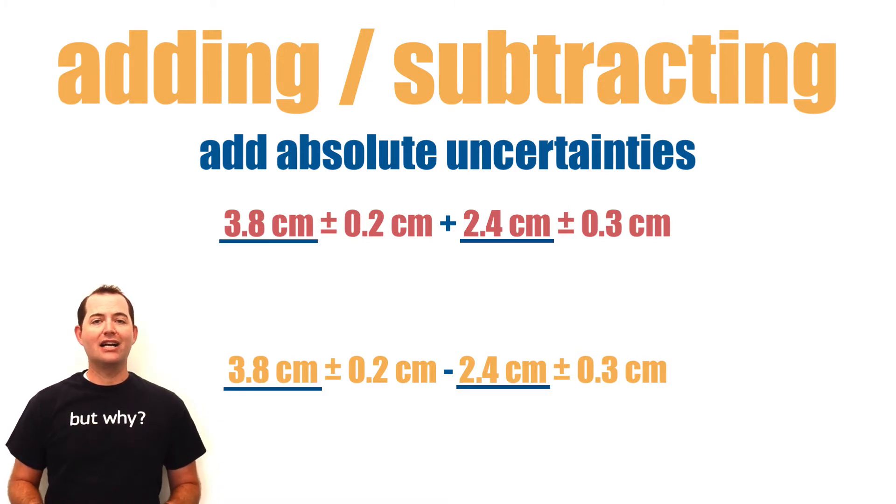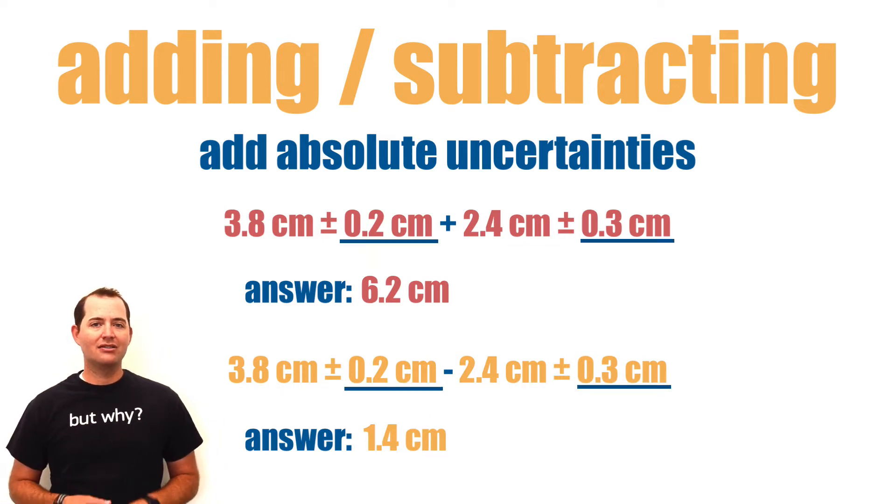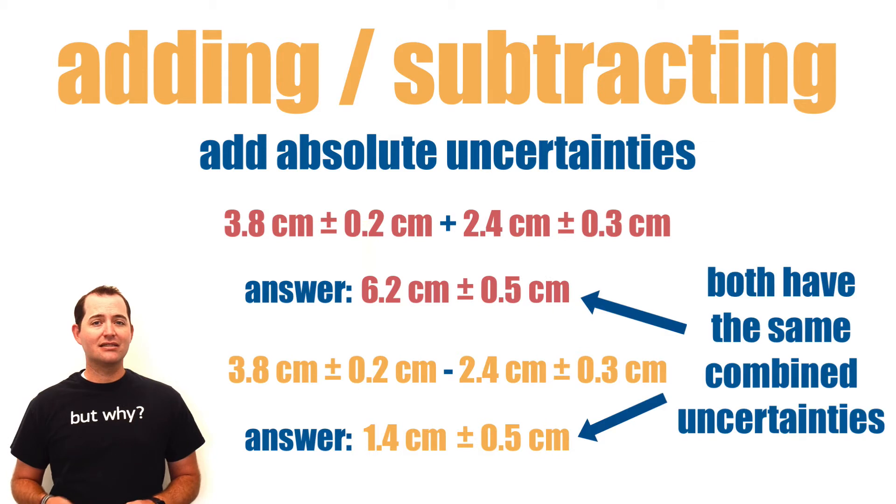First, we will add or subtract as normal using our values. Next, we will add or combine our uncertainties. Even if we are subtracting our measured values, we will still add our uncertainties.